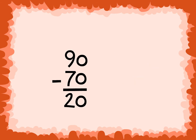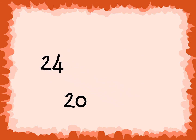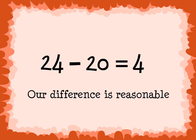Now we can find the exact difference: 89 minus 65 is 24. To check if our exact difference is reasonable, it needs to be no more than 5 away from the estimate, or no less than 5 away from the estimate. Our exact difference is 4 more than the estimated difference, so our difference is reasonable.